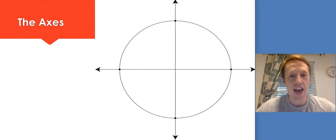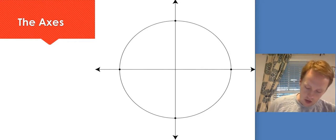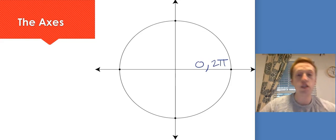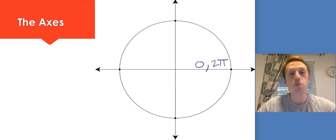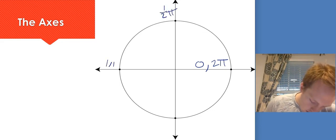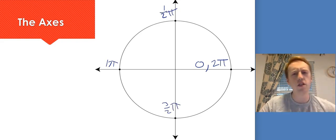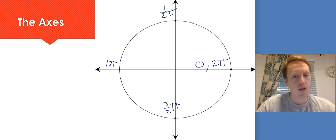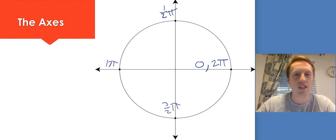Let's start with the axes. Over here we've got 0 and 2π — 0 means we've not gone anywhere, 2π means we've completed a full circle. This one's going to be 1/2 π, this is 1π, and this is 3/2 π. You might notice I write it a little differently: instead of π/2, I write 1/2 π, or instead of 3π/2, I write 3/2 π. That's because it makes the next step easier — figuring out the reasoning of where I am.